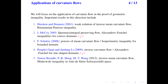I would also like to mention the result by Brendle, Hong, and Wang. They used the inverse mean curvature flow to prove a Minkowski-type inequality for hypersurfaces in the AdS-Schwarzschild space. In the following, I will describe the second and fourth results on the curvature flow proof for the Alexandrov-Fenchel inequalities.